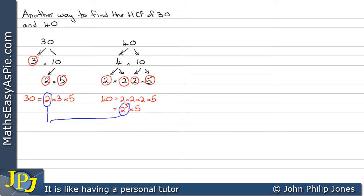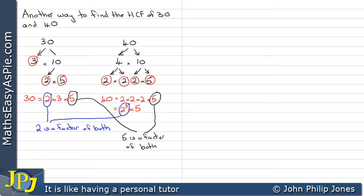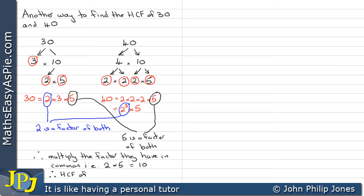Then we look to see what they've got in common. They have a 2 in common — that is a factor of both 30 and 40. They have a 5 in common — that is a factor of both 30 and 40. Therefore, we multiply the factors they have in common: we take the 2 and multiply it by the 5 to give us 10. So the highest common factor of 30 and 40 is 10.